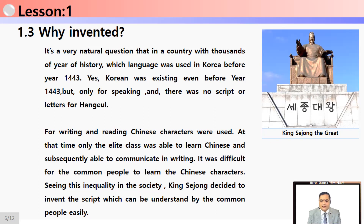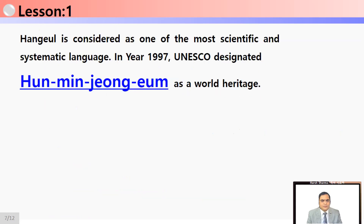So to summarize: why was Hangul invented? Because there were no letters for the Korean language before 1443, and Chinese characters were used for writing and reading. Additionally, Hangul is considered one of the most scientific and systematic writing systems. In 1997, UNESCO designated Hun Min Jong-gum as a world heritage document.